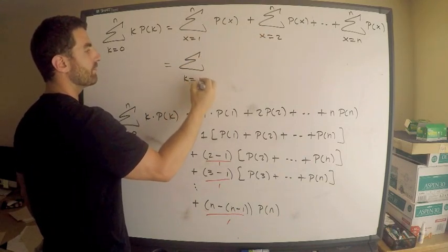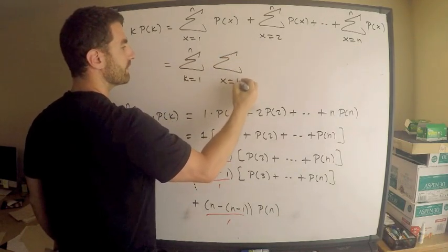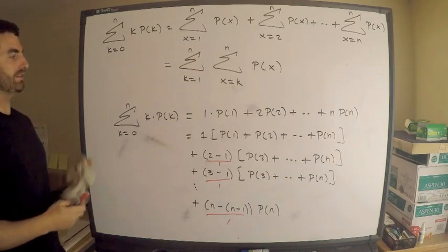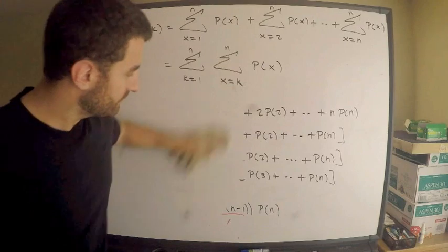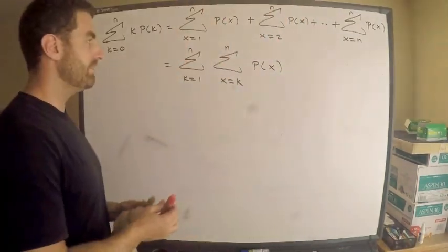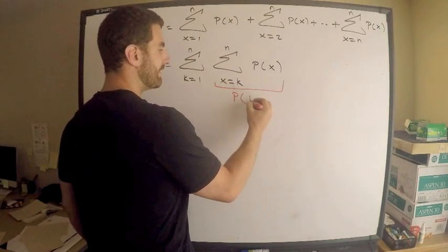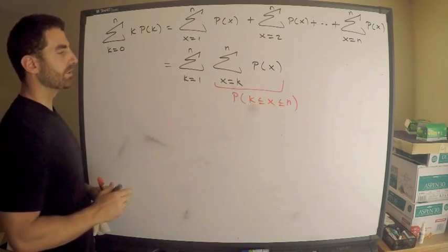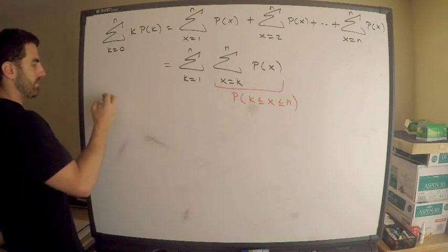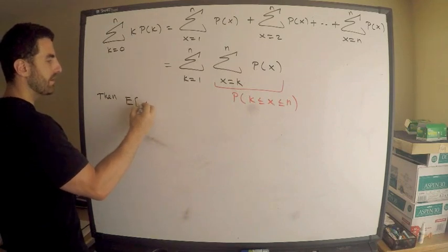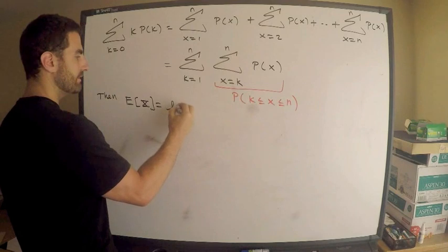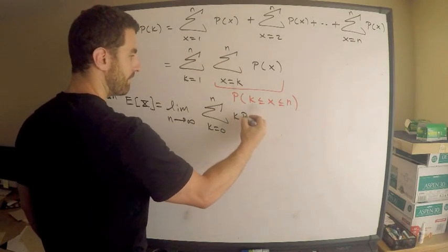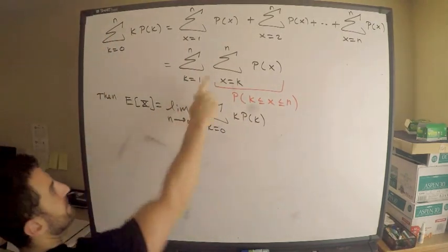So this is the sum from k equals 1 to n of the sum from x equals k to n of probability x. That's all well and good. We're almost there. We're almost there. What does the inner sum say? What is this equal to? This is the probability that k is less than or equal to x is less than or equal to n. Yeah, that's exactly what that is. Exactly what that is. So what can I say now? Now, then the expected value of x is equal to the limit as n tends to infinity of this business, k equals 0 to n, k p k. But that's equal to this. That is equal to this, which is equal to...